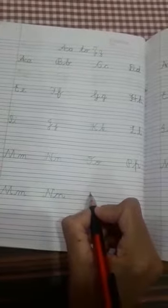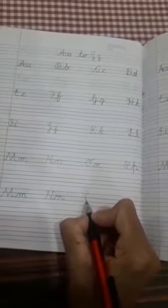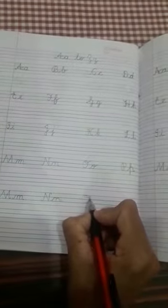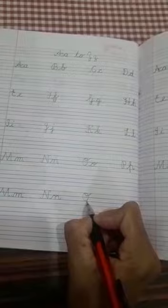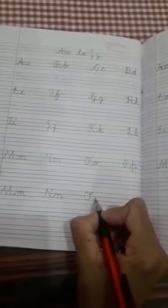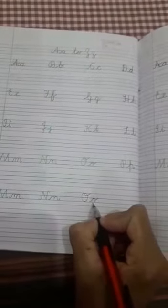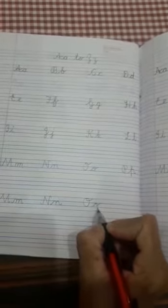Now O. Put the pencil on top line, make a circle and a turn. Capital O. Now small O. O for orange.